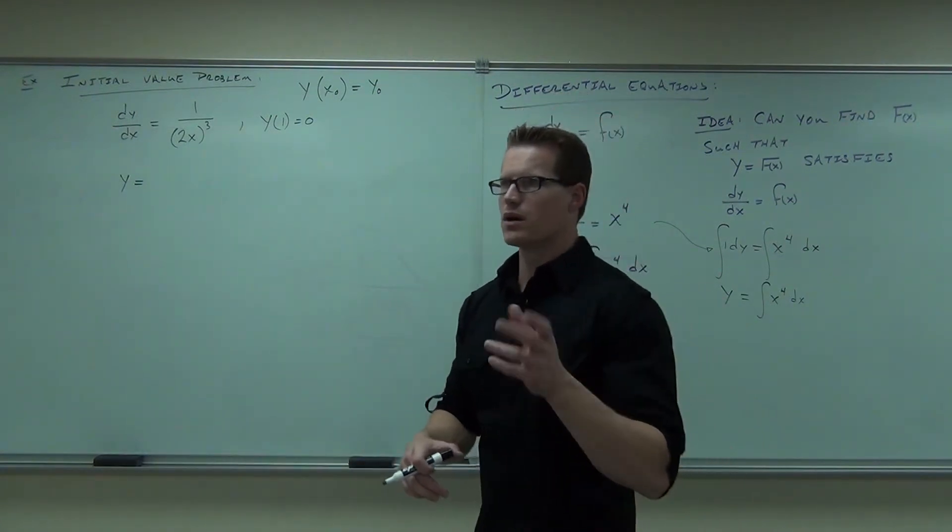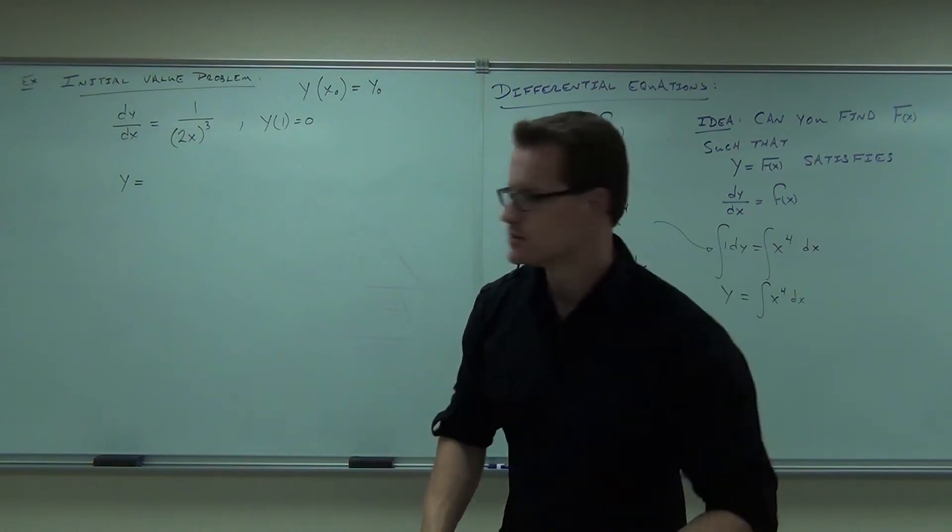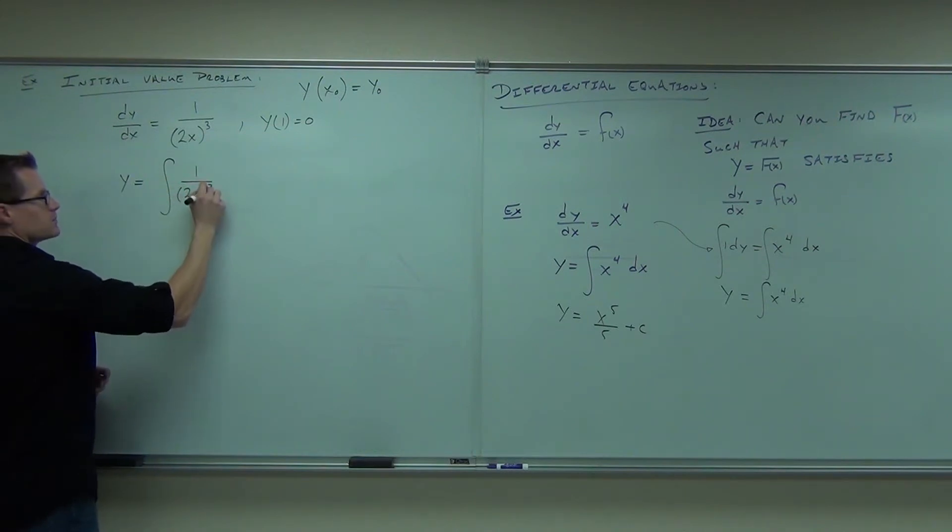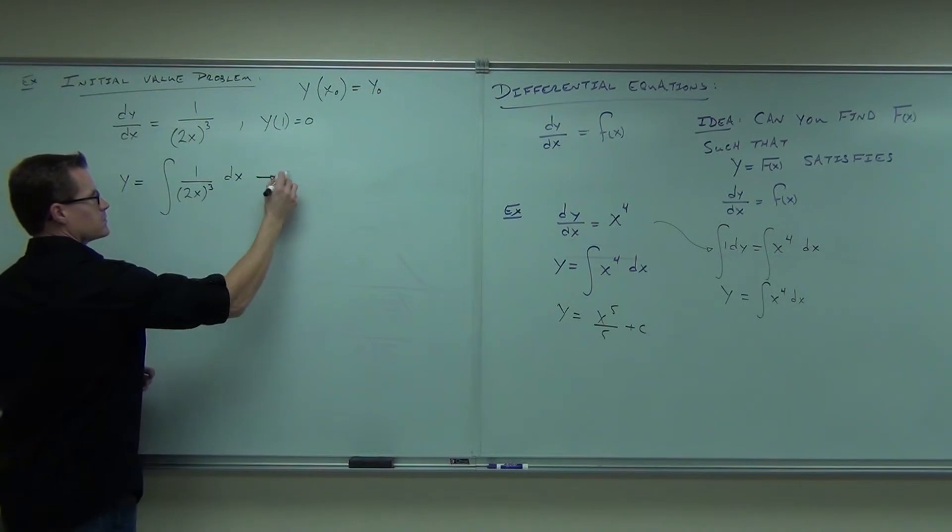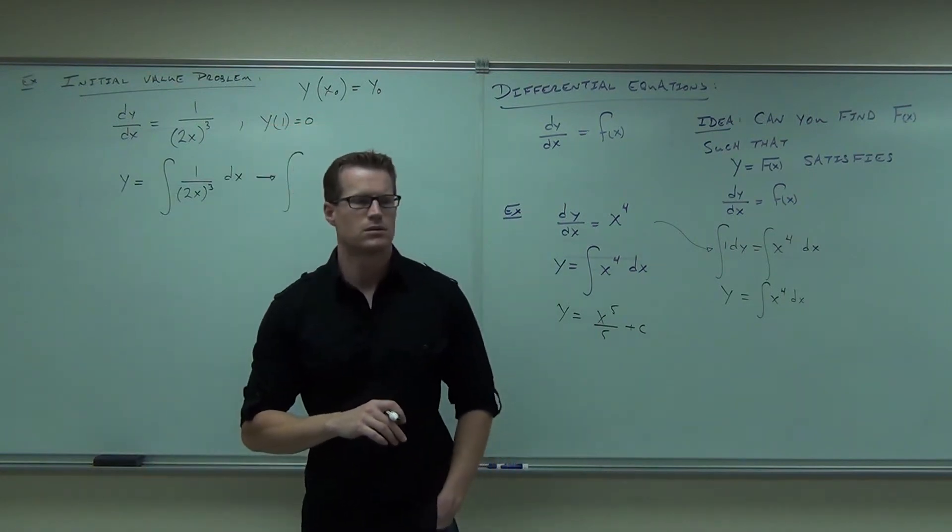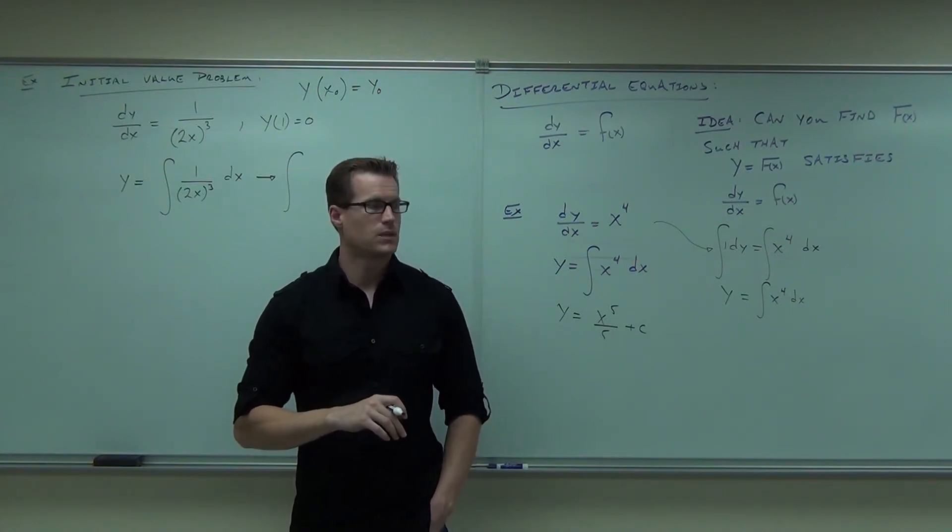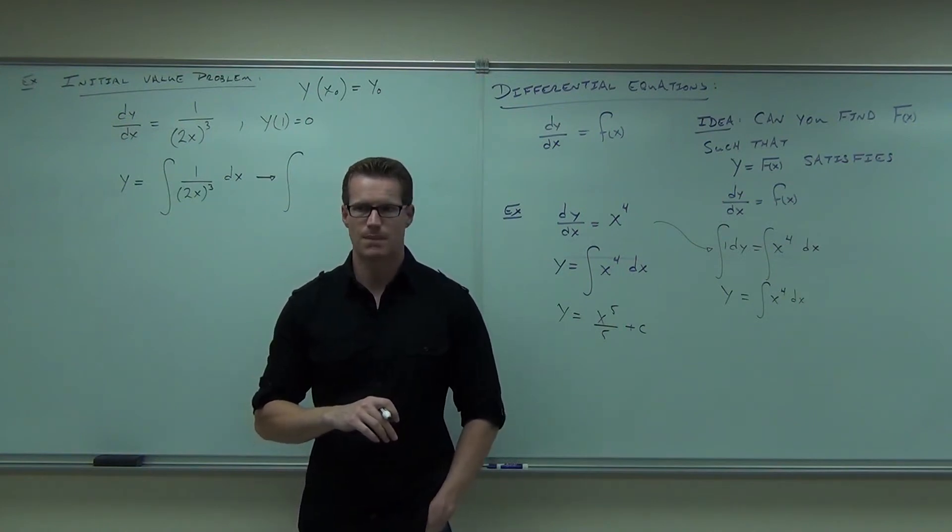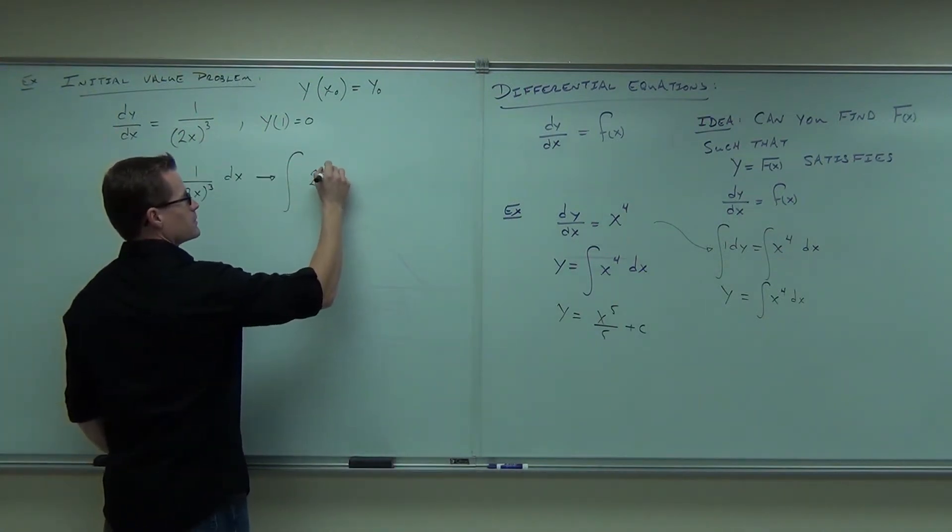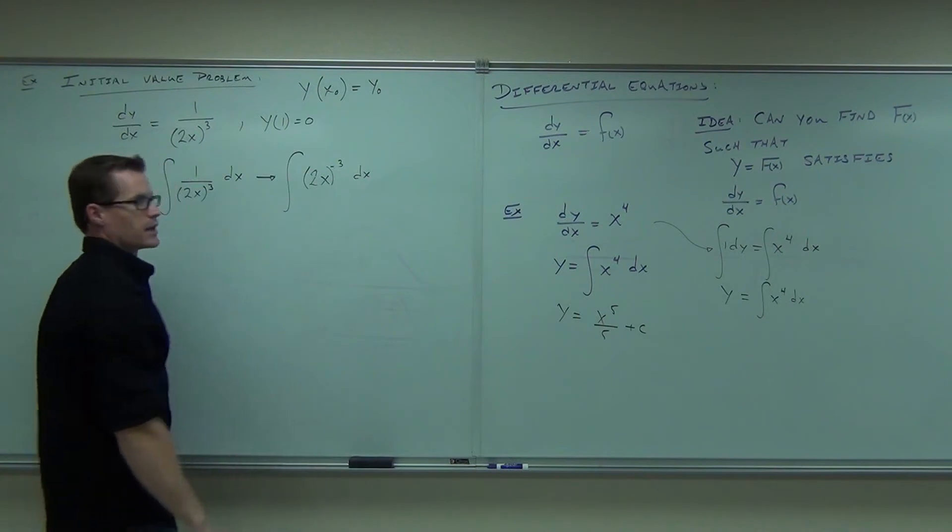If the derivative of y is 1 over 2x to the third, we need to undo that derivative. That's the integral. That's the anti-derivative idea. So what we want is to undo this thing. Tell me maybe the first thing that you would do. Make it fit the table. Bring the bottom to the top. You could. You'd have to be very careful with that. I'll show you both ways here. Be very careful on how you handle this.